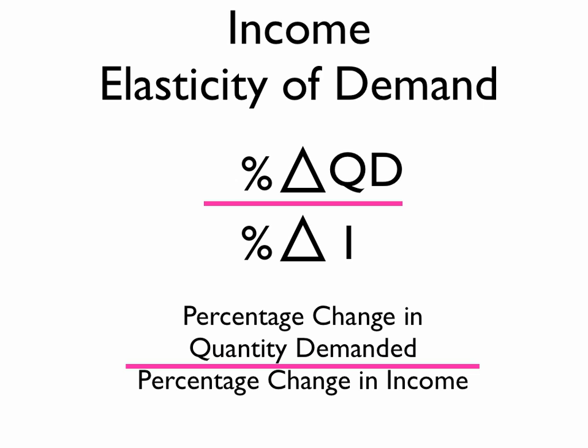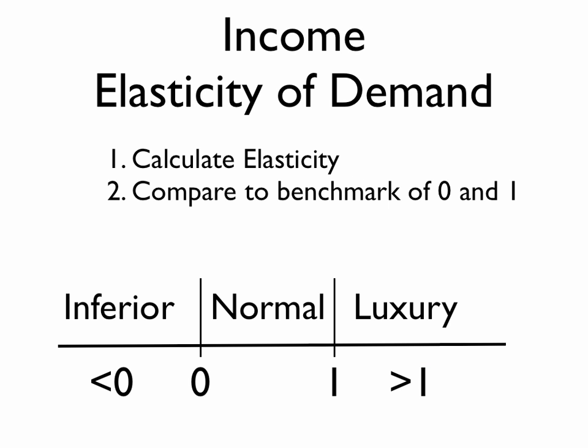The way that we analyze this value is we calculate the elasticity first with the equation, and we compare it to our benchmark of 0 and 1. If the value is below 0, or a negative number, that good can be considered an inferior good. If the value falls between 0 and 1, that good is a normal good. And if the value is greater than 1, then we consider that good a luxury good.